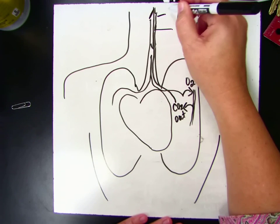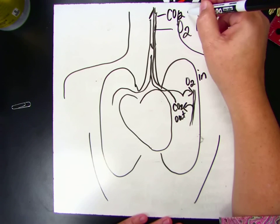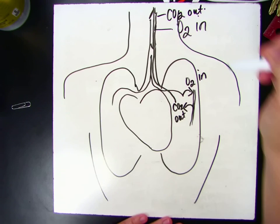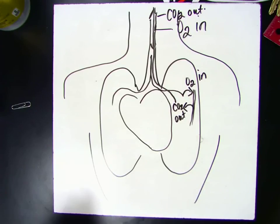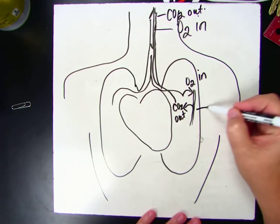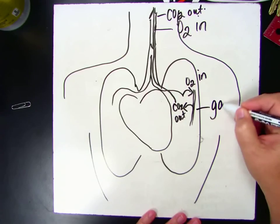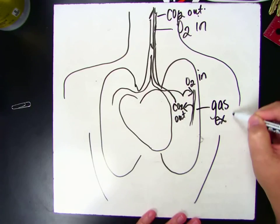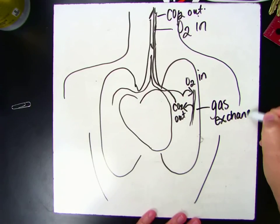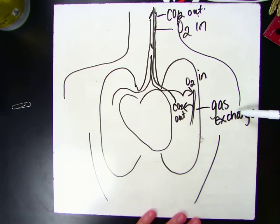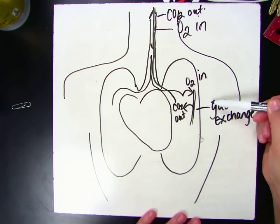So carbon dioxide comes out. So we need to remember oxygen comes in, carbon dioxide comes out. So this is called gas exchange. And the lungs do this. The lungs exchange gas.